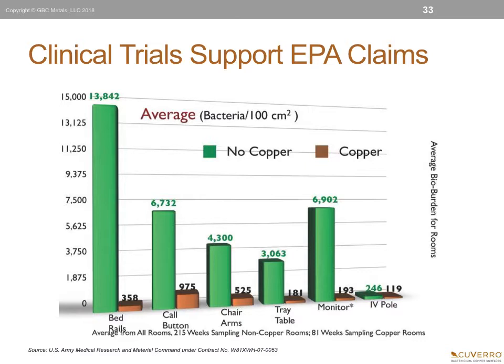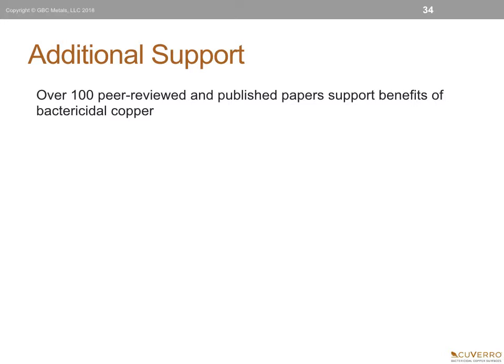As you can see from the bar chart below, the clinical trials support the EPA claims. Specifically, the incumbent materials, identified in green, had significantly higher bioburden values than the retrofitted copper products. In some instances, there is a reduction of burden in excess of 95%, such as the bed rails. It is also very important to know that there are over 100 peer-reviewed and published papers that support the benefits of bactericidal copper.